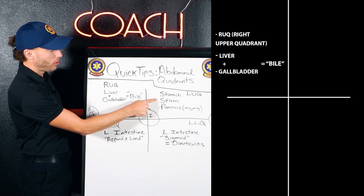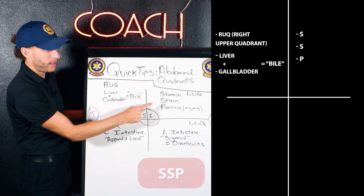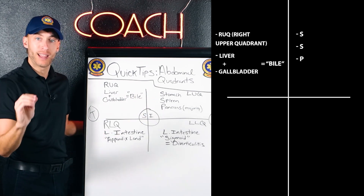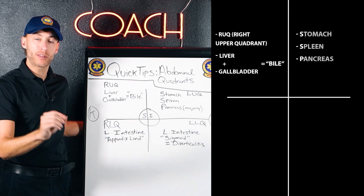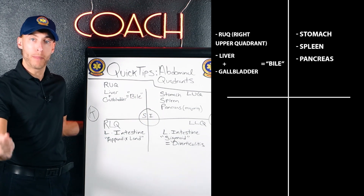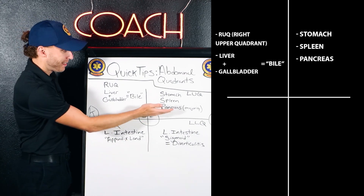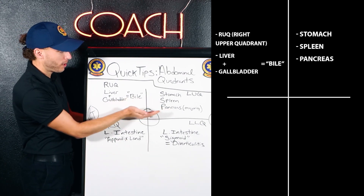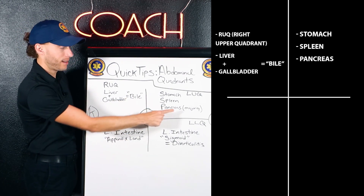Think SSP for the left upper quadrant: stomach, spleen, and pancreas. The pancreas kind of slips on both sides, but the majority is on the left side.